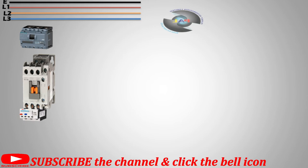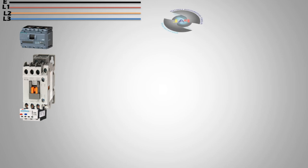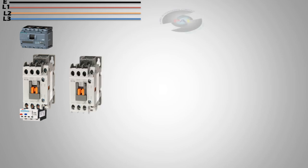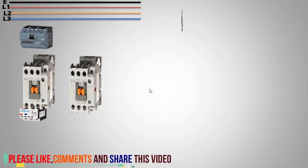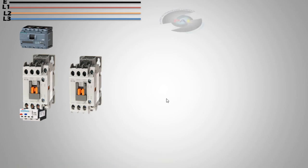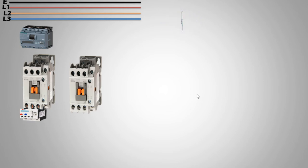The second magnetic contactor handles the reverse connection. First is forward, second is reverse, and with these we control our motor as star and delta. Both in forward and reverse, we connect the motor as star and delta. These two methods, step by step, control our motor.